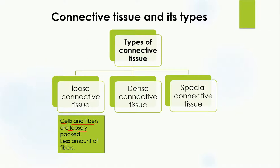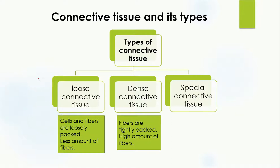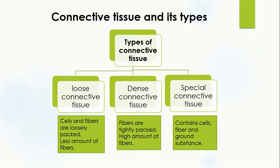Loose connective tissue contains cells and fibers which are loosely packed and has a lesser amount of fibers. In the case of dense connective tissue, the fibers are tightly packed and there is a high amount of fibers. You can remember it like this: if there are so many trees in a particular area, that area is very dense and difficult to pass through — similarly, in dense connective tissue, so many fibers are present that they give a dense impression. Special connective tissue contains cells, fibers, and ground substances.